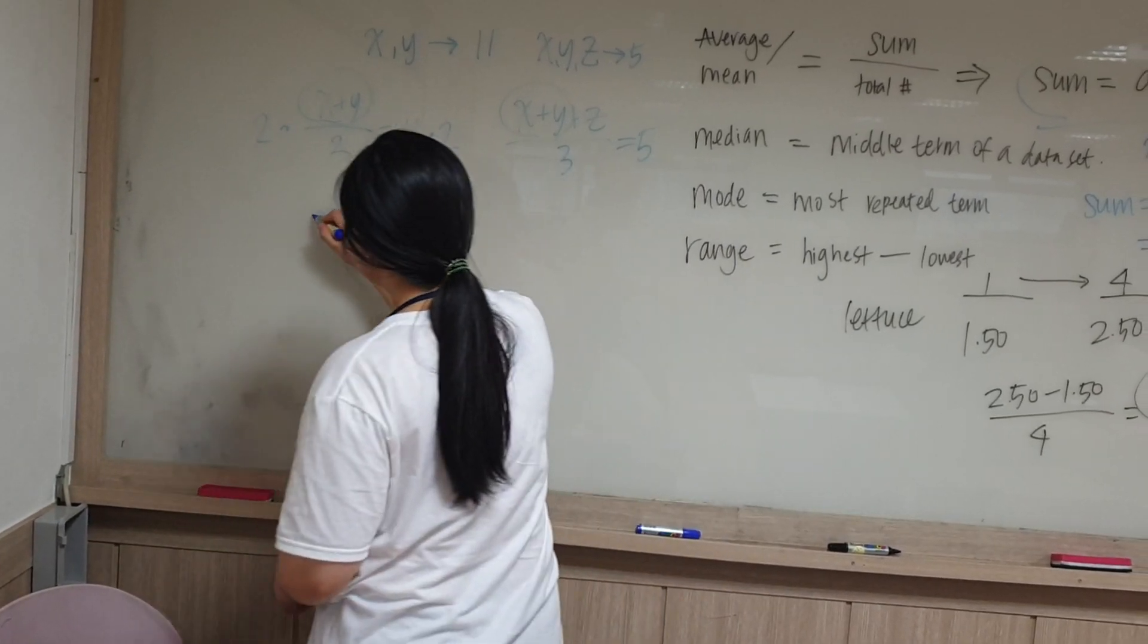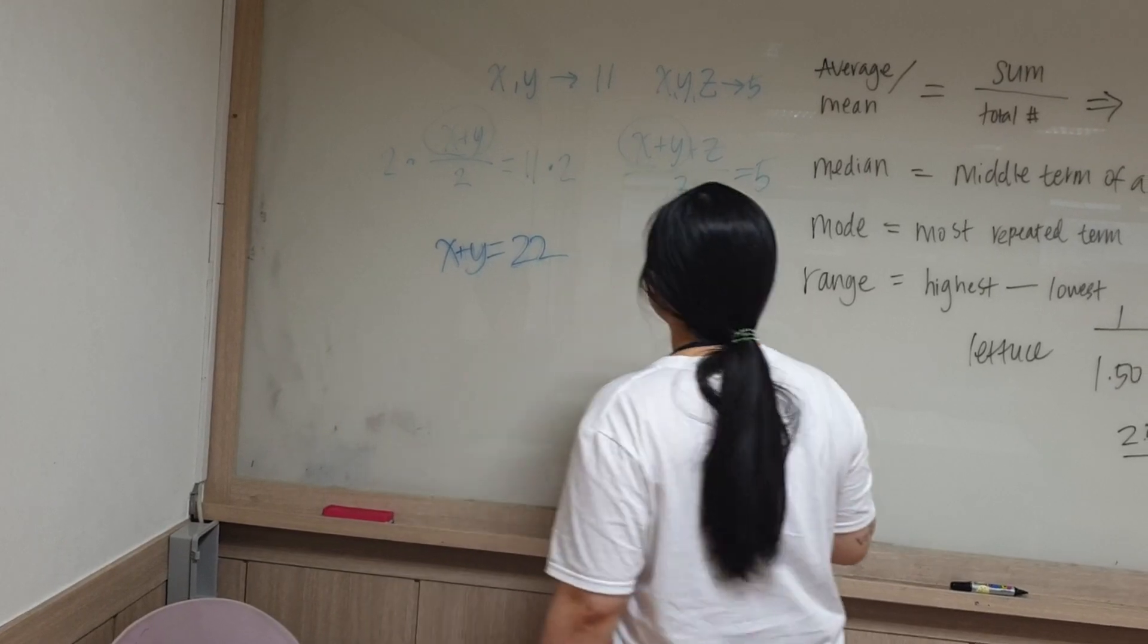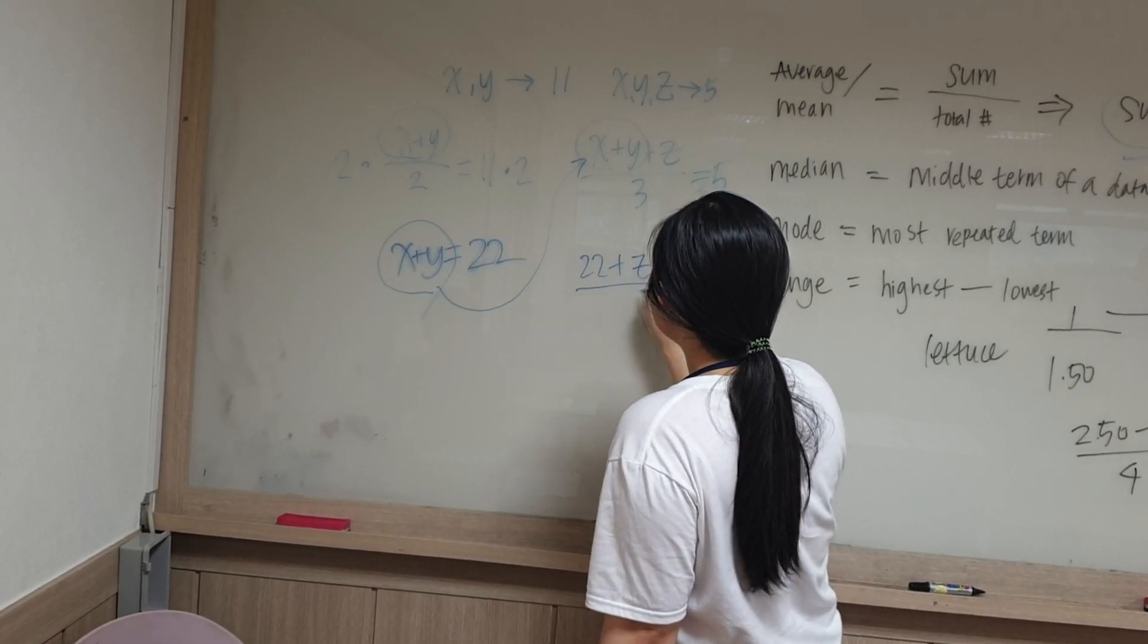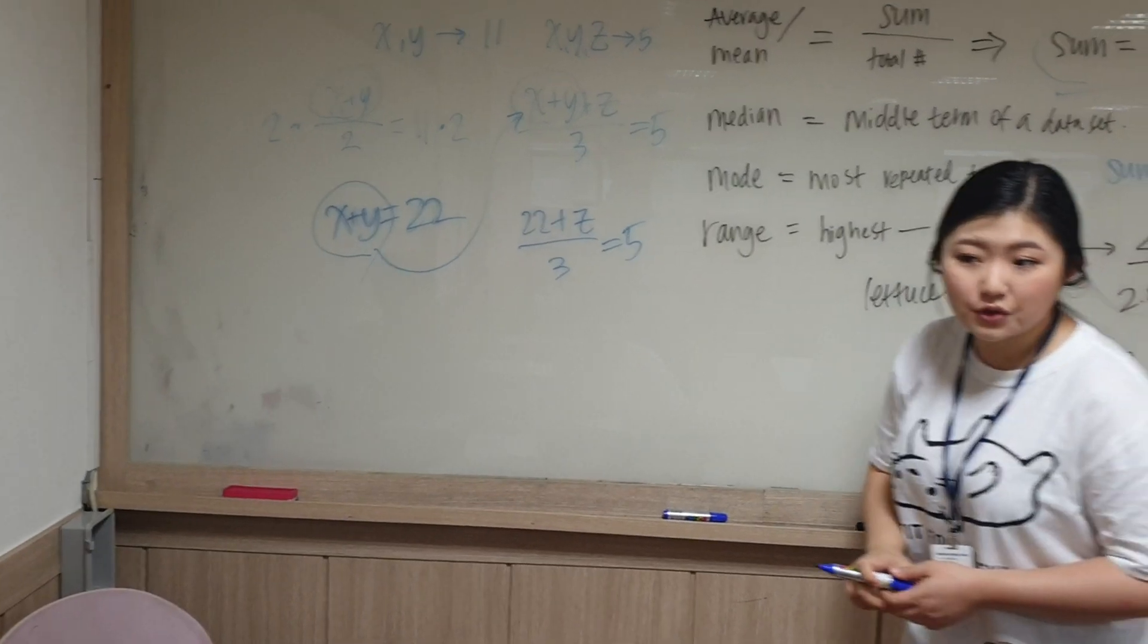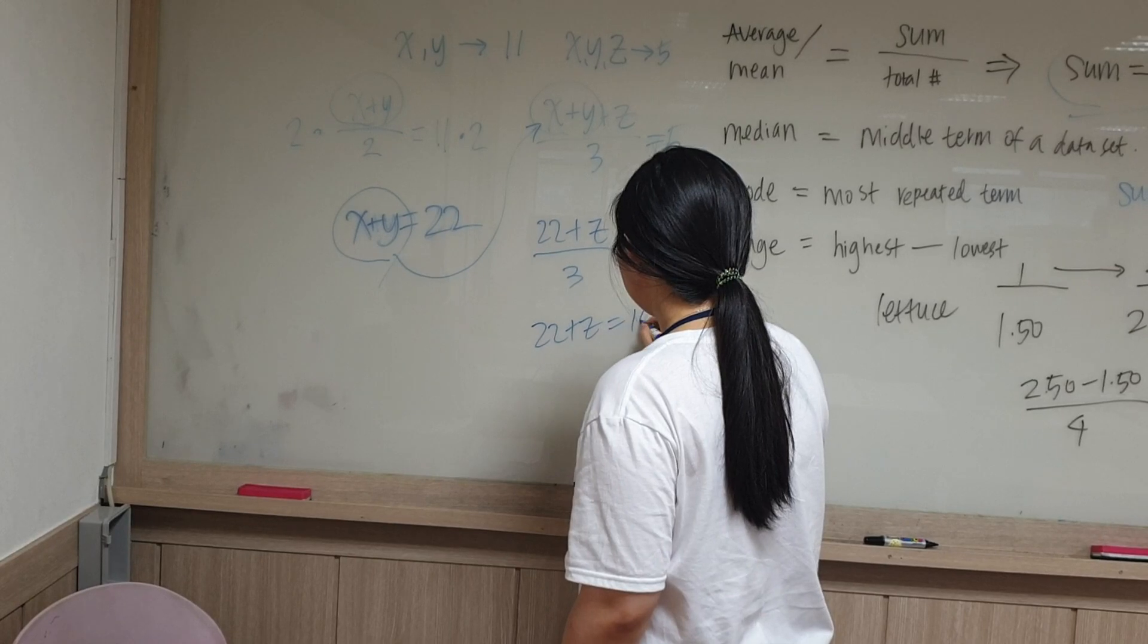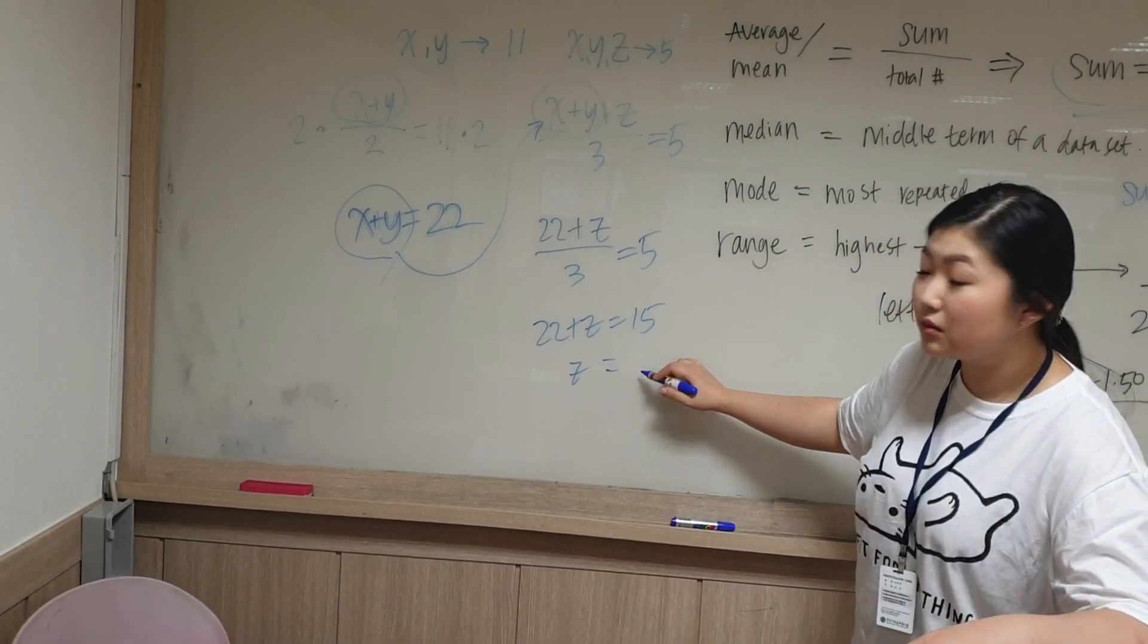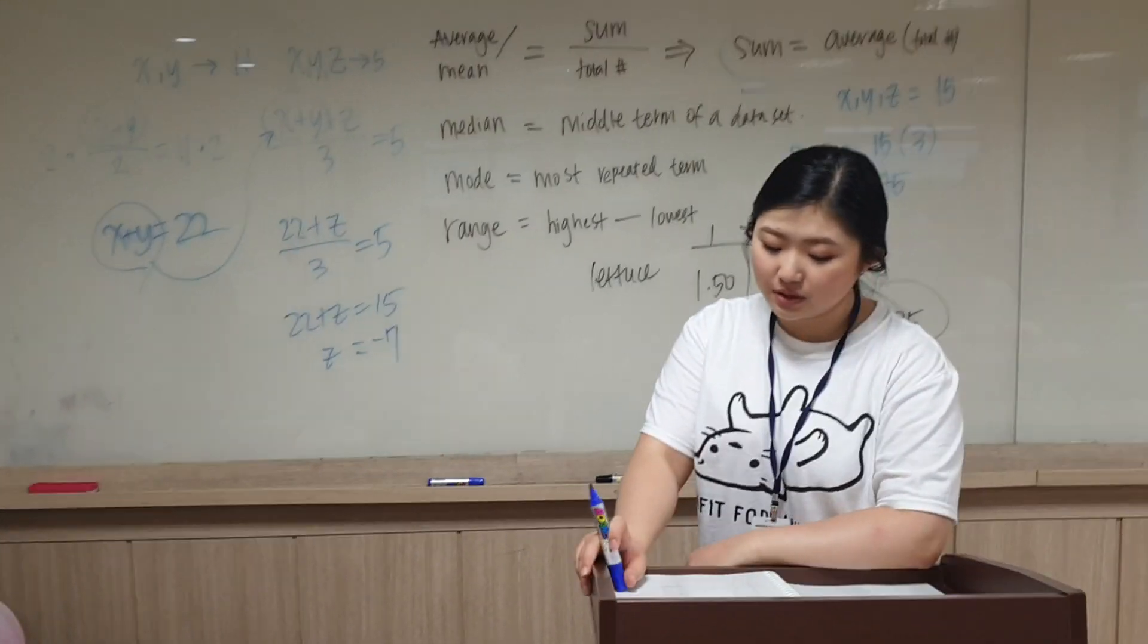And then you plug this whole term into there to get 22 plus z divided by three equals five. And then from there you just do your basic algebra to solve for z. 22 plus z equals 15. Z equals what? Equals minus seven, minus seven. So your answer choice should be B.